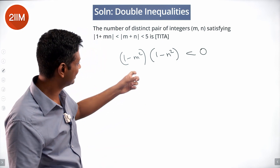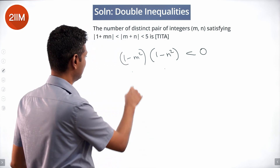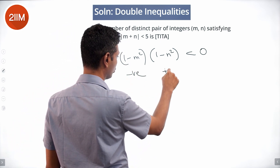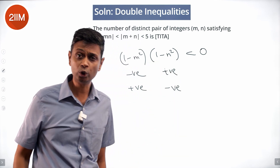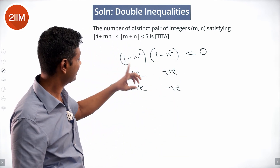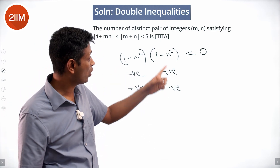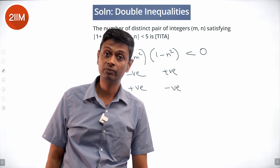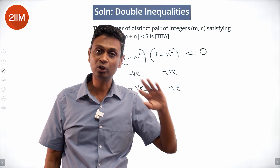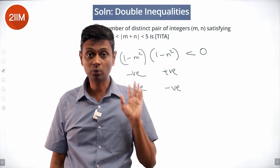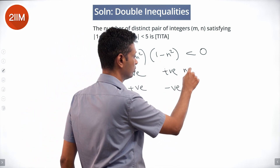Looking at distinct pairs of integers: the product of two numbers is less than 0, so one is negative and one is positive, or the other way around. Either (1 − m²) is negative and (1 − n²) is positive, or vice versa. If (1 − m²) is negative that's easy — lots of numbers satisfy that. If (1 − n²) is positive, n can't be 1 — that gives 0. Values 2, 3, 4, 5 won't work either. The only possibility where (1 − n²) is positive is n = 0.